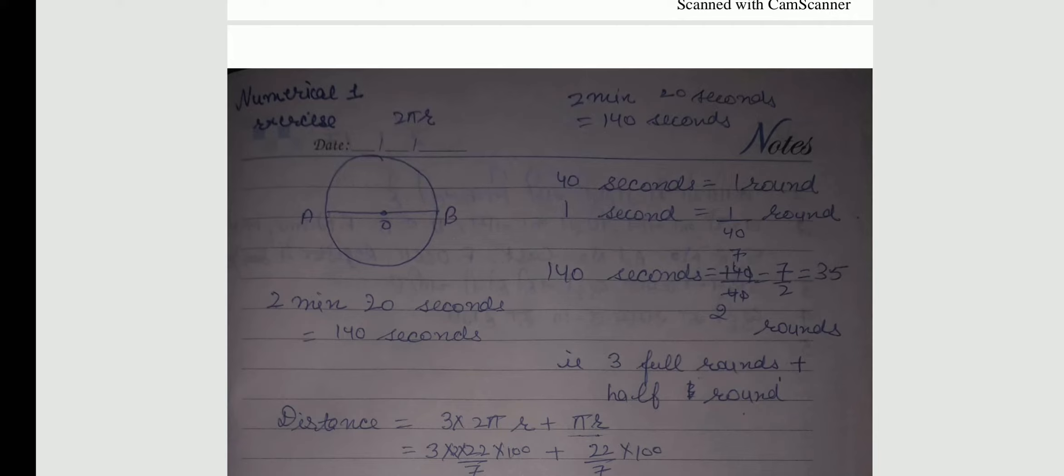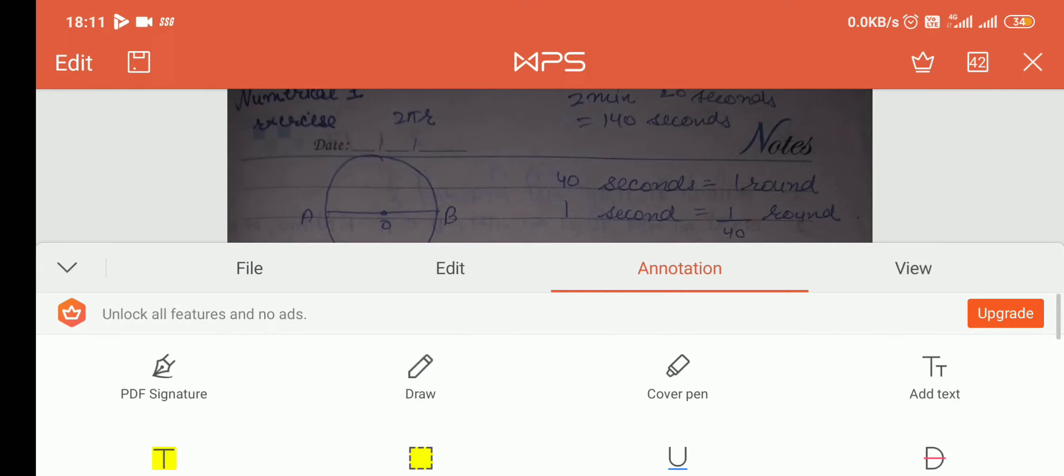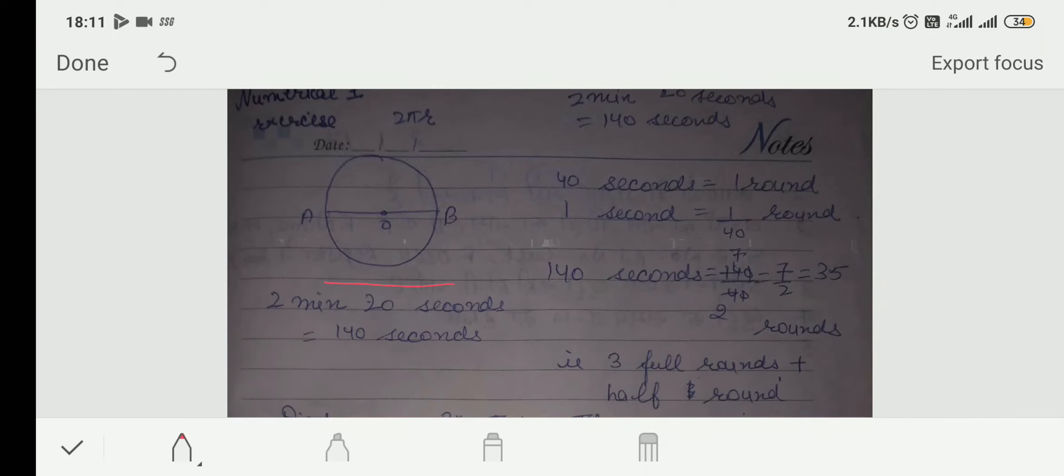So, again, first we will write the given things which are given in numericals. In last numerical, square field is given. In this numerical, circular track is given. So, I have drawn a circular track for you.